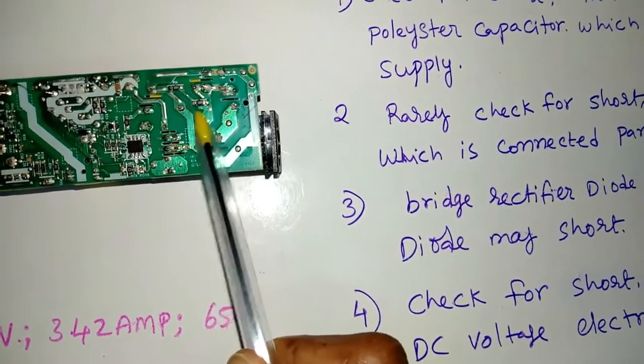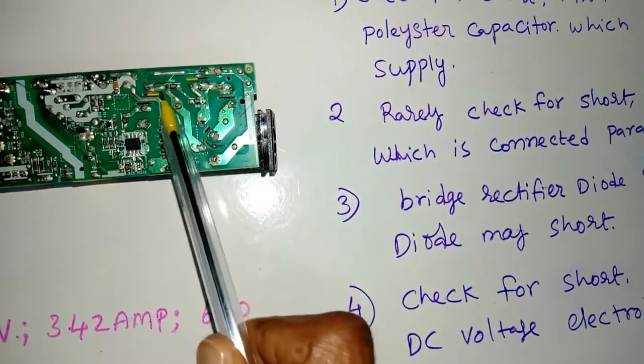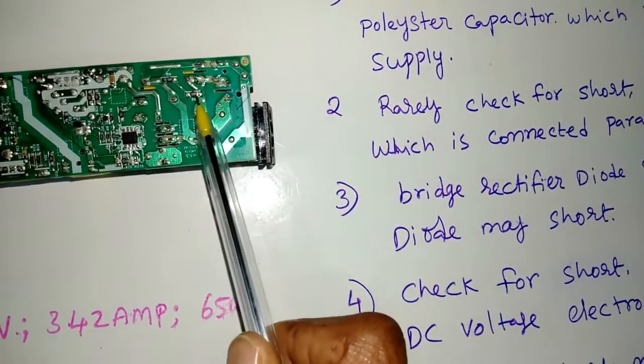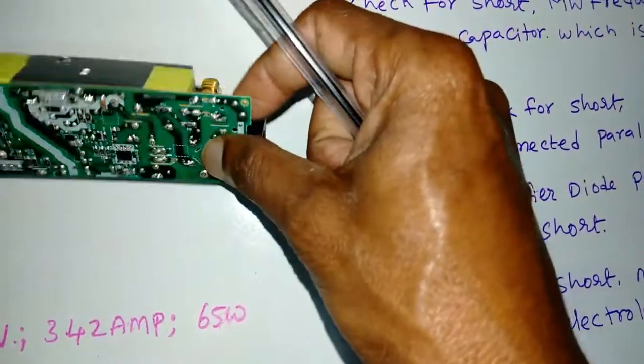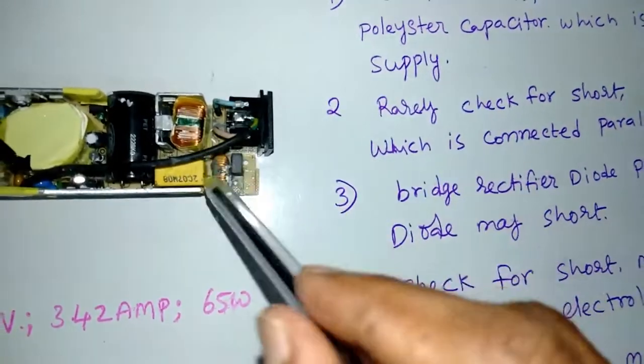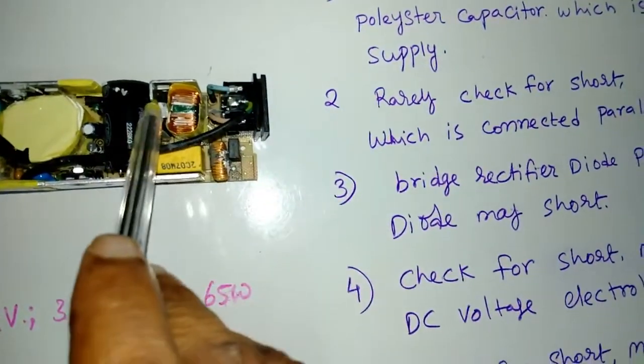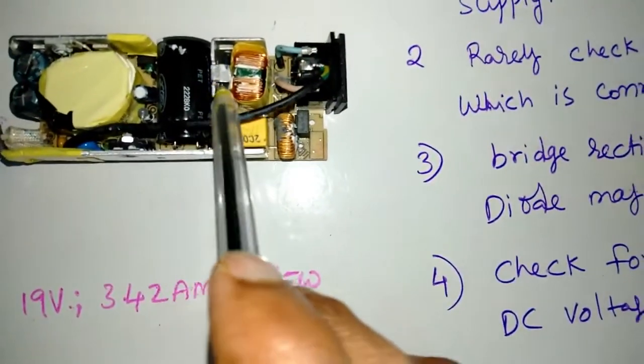These are serially connected two resistors connected on AC supply. Thirdly, we have to check the bridge rectifier diode package.